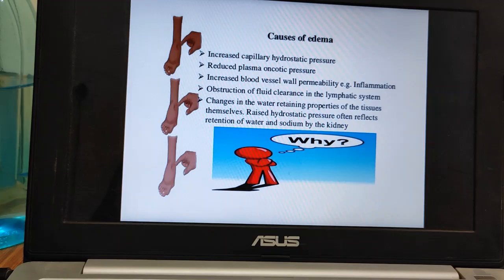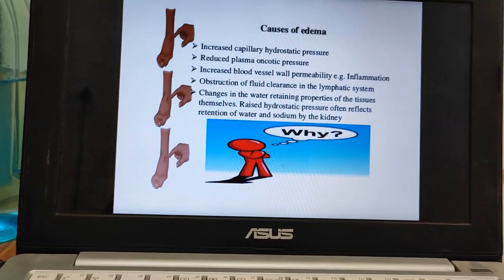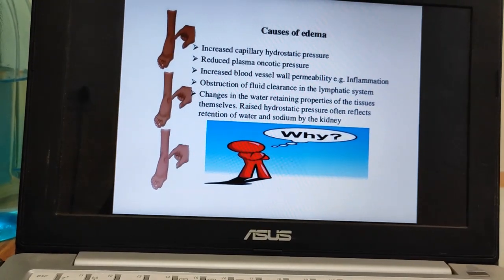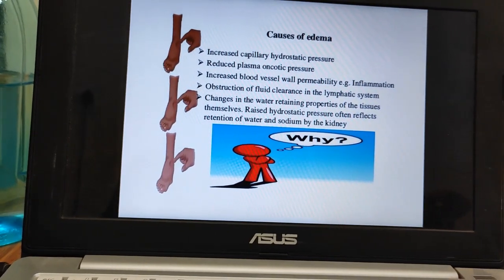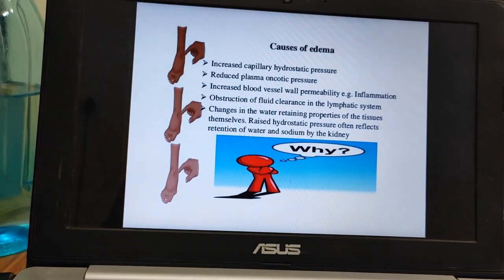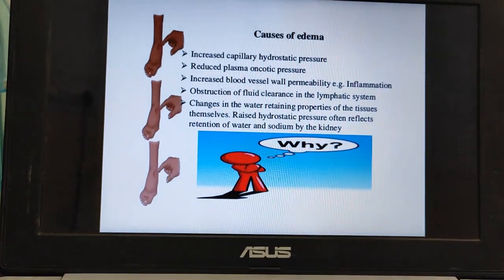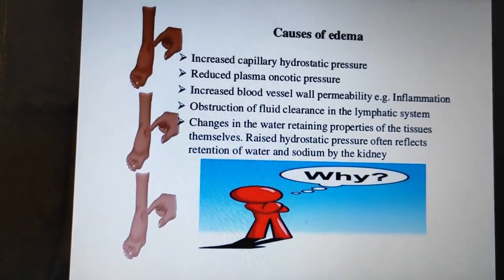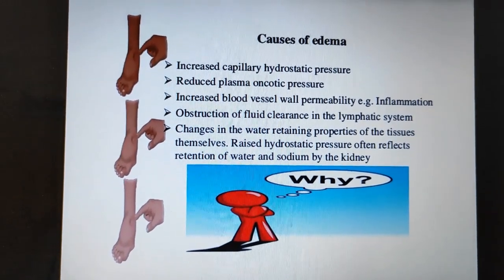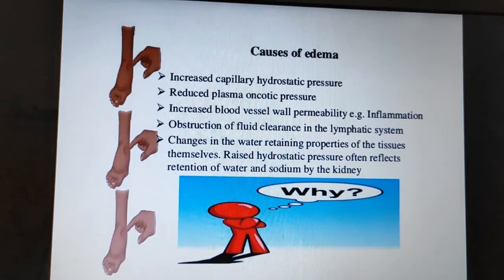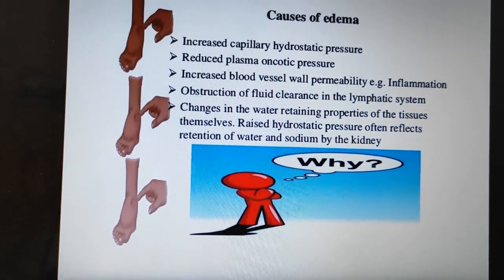The mechanisms of edema formation are summarized as follows. First, increased capillary hydrostatic pressure — any reason that increases capillary water pressure will force water to seep into the interstitial space. Second, reduced plasma oncotic pressure, meaning reduced protein or albumin in the blood, causes fluid to move from the intravascular area into the interstitial space. Third, increased blood vessel wall permeability, which is capillary leakage, seen in any kind of inflammation and injury.